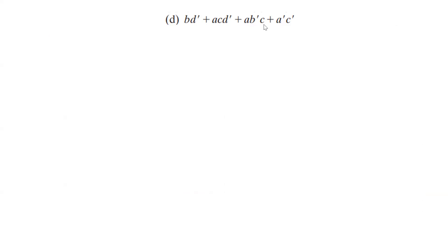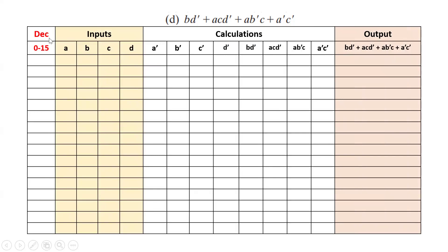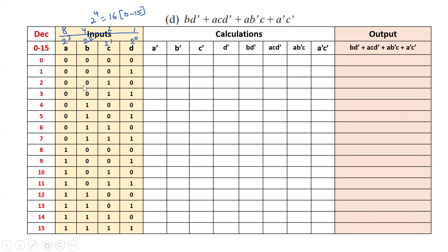Now this is the fourth boolean function. Here we have four input variables A, B, C, D. Based on these four input variables we develop the truth table, with decimal equivalent values from 0 to 15 because with four input variables we have 2 power 4 = 16 binary combinations. Binary weights are 2 power 0, 2 power 1, 2 power 2, and 2 power 3 — equivalent values 1, 2, 4, 8. We fill all binary combinations from 0,0,0,0 to 1,1,1,1. Then we should calculate A', B', C', D', find the product values, and then find the output value.